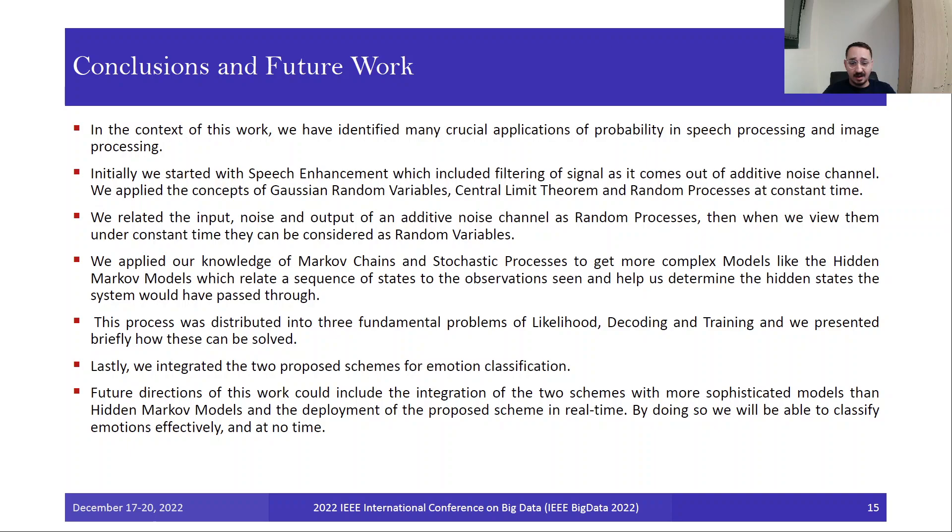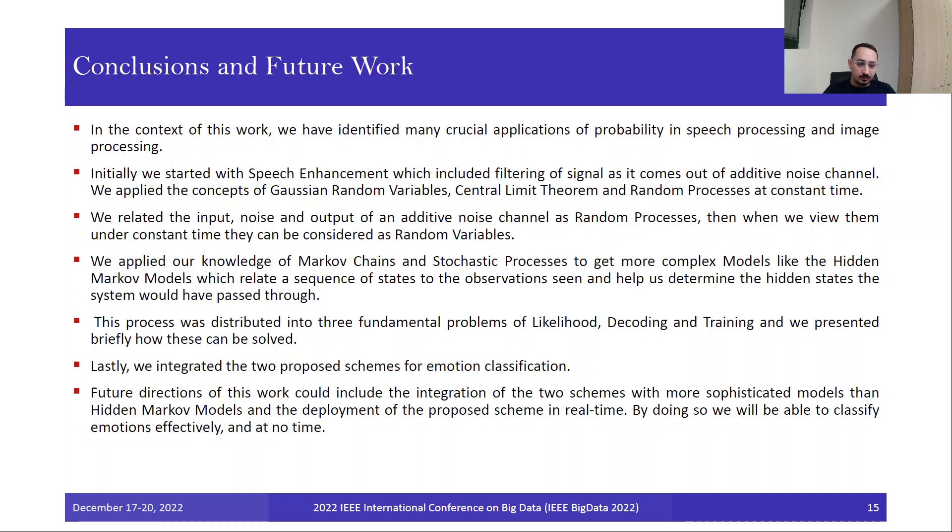Lastly, we integrated the two proposed schemes for emotion classification. Due to time constraints, we couldn't include everything about speech processing and image processing, but generally those two incorporated schemes performed well on how to predict the emotion and classify it successfully. Future directions of this work include the integration of the two schemes with more sophisticated models than hidden Markov models. We want to create a Bayesian neural network and the deployment of the proposed scheme in real time. By doing so, we will be able to classify emotions effectively and in real time without having to wait to process or train the model. That was all. Thanks for your attention. If you have any questions, I will be delighted to answer.